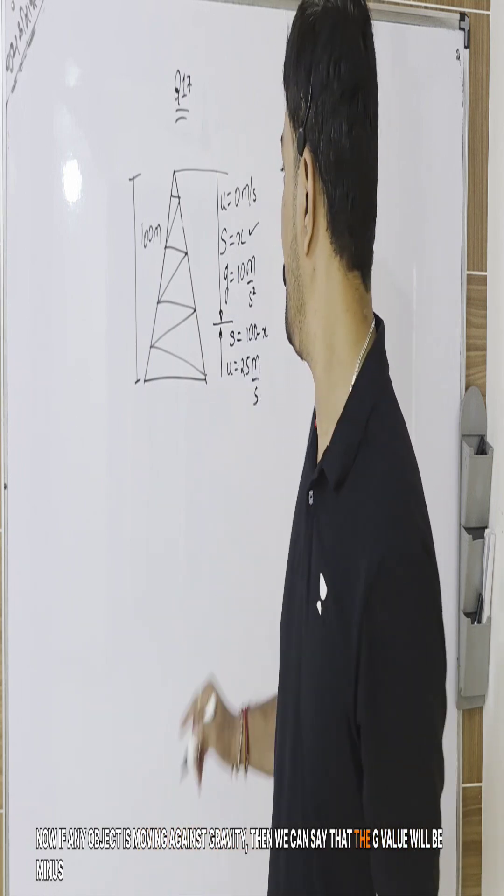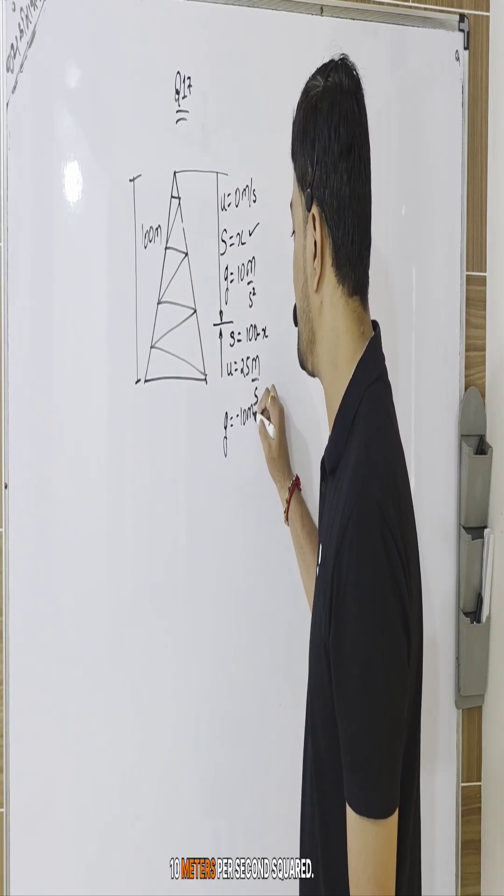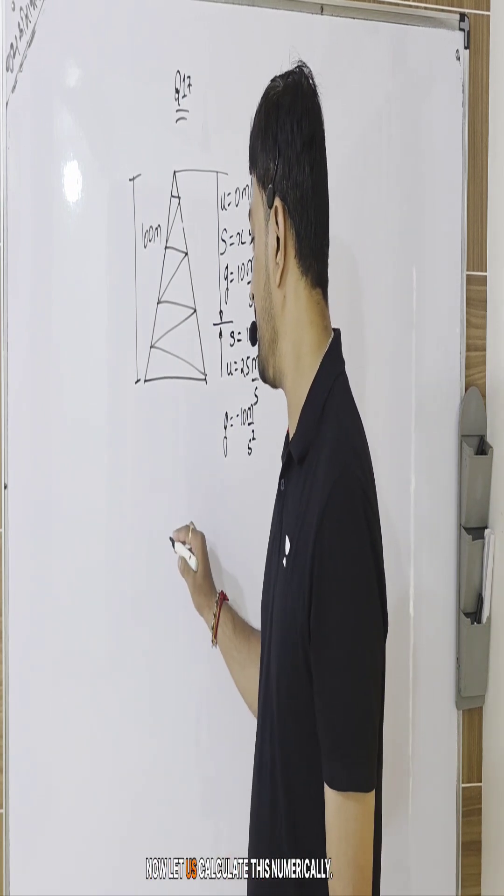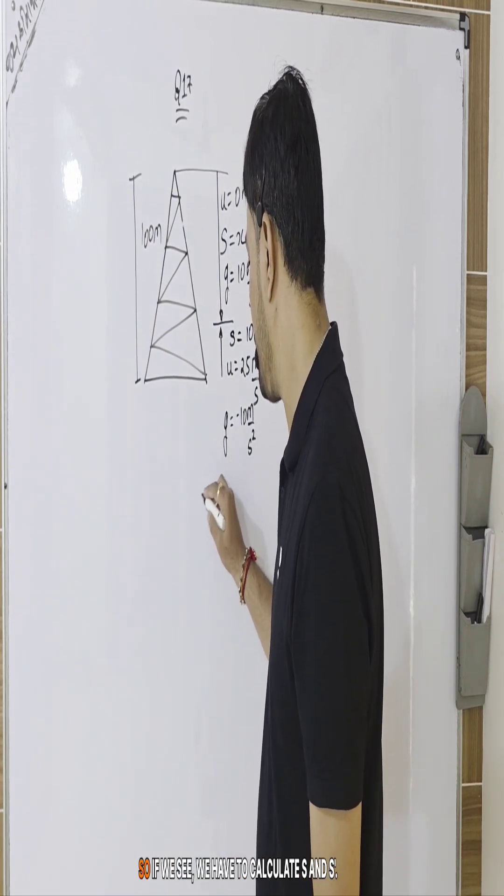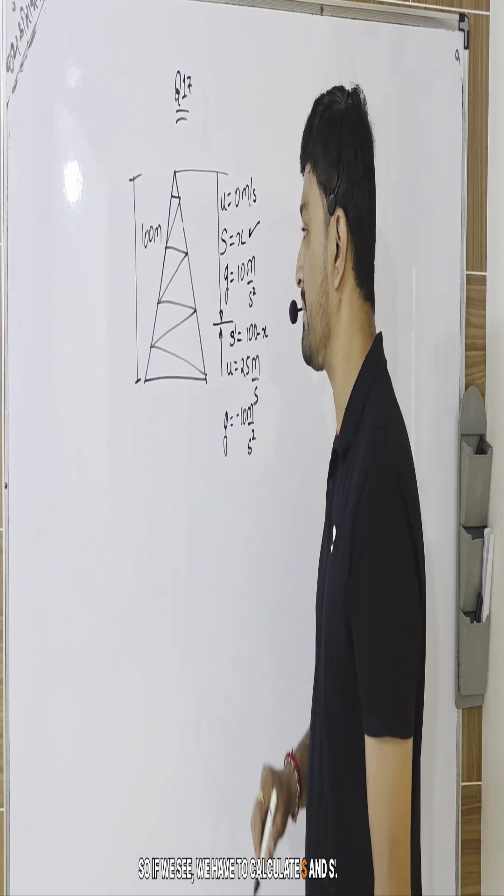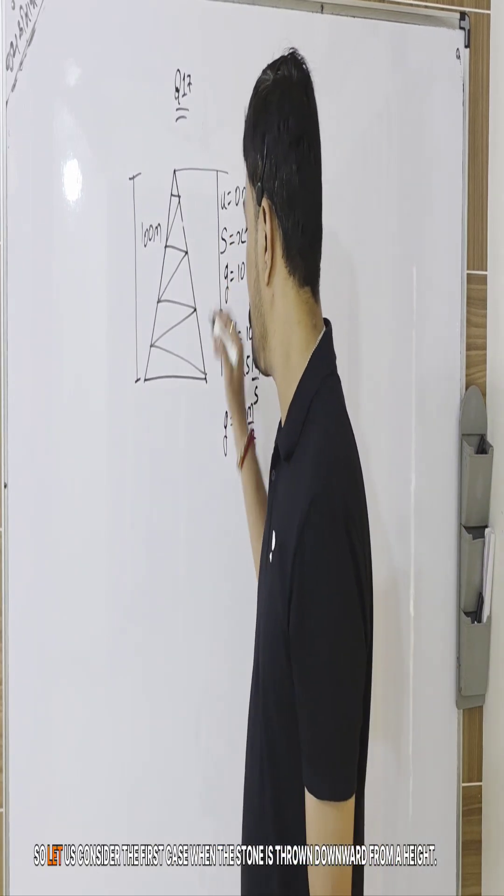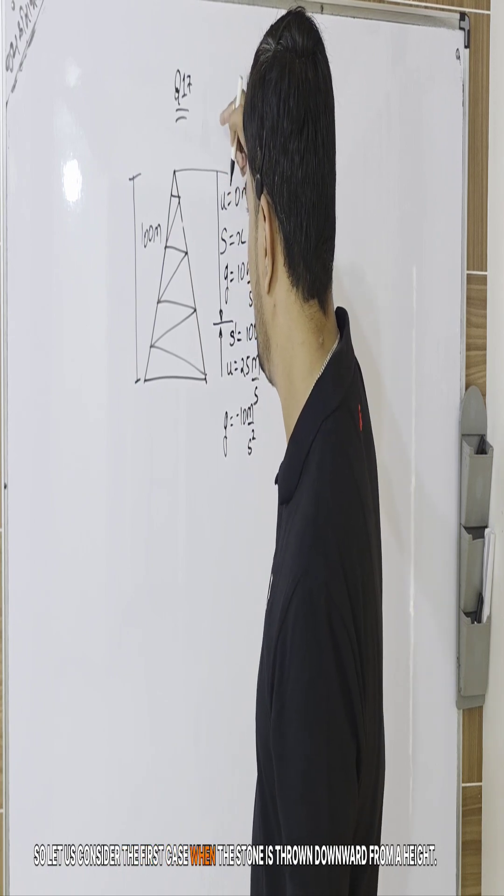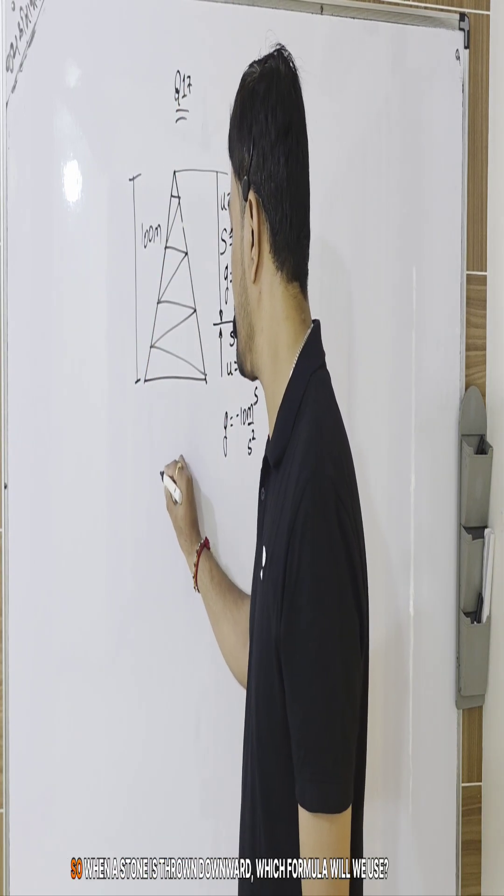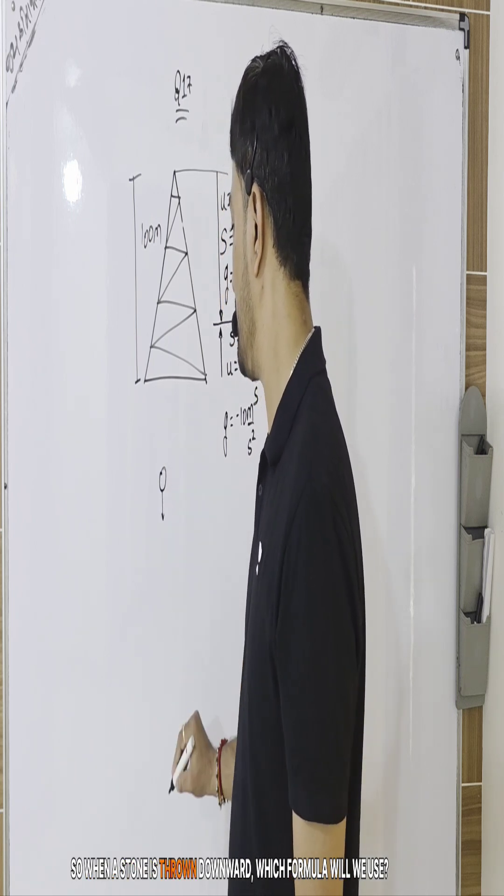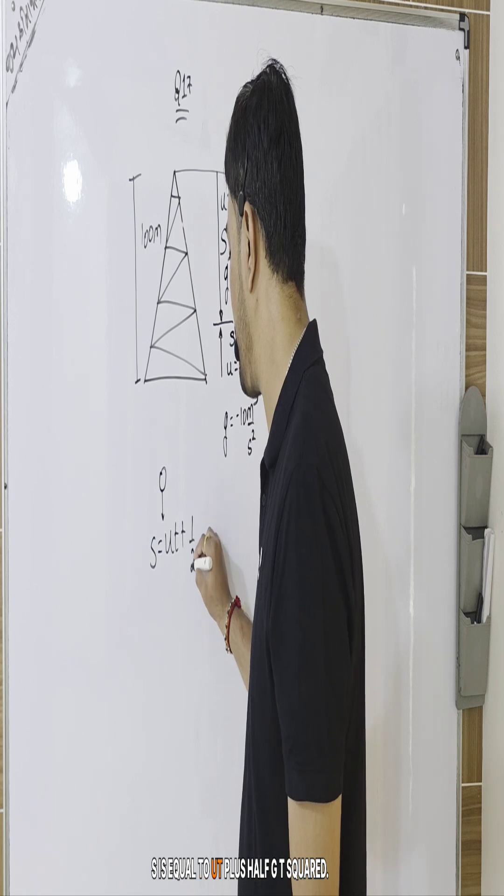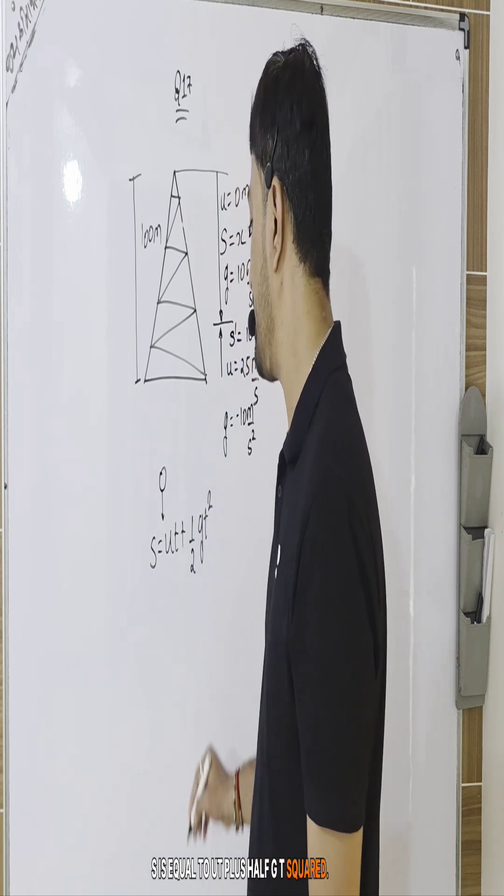Now let us calculate this numerical. We have to calculate s and s dash. Let us consider first case when the stone is thrown from a height to downward side. When a stone is thrown in downward side, what formula we will use? s is equal to ut plus half g t square.